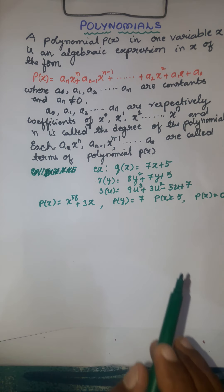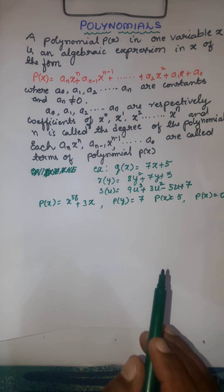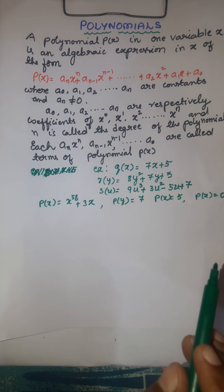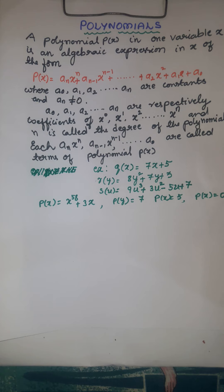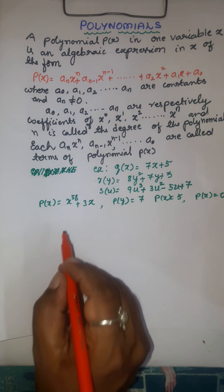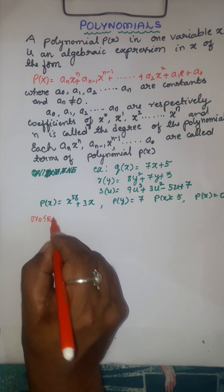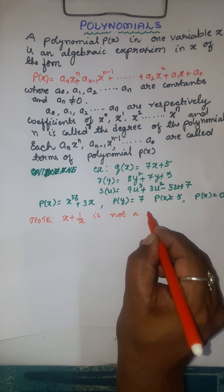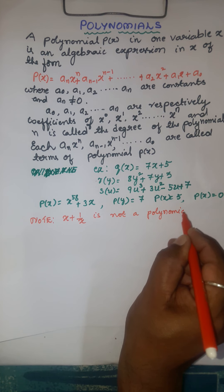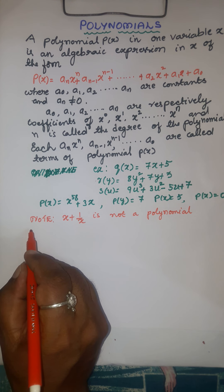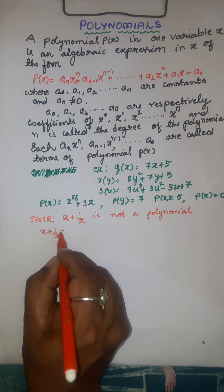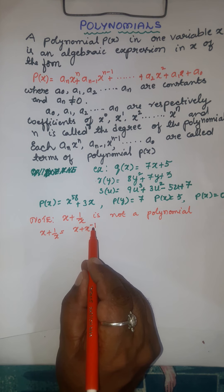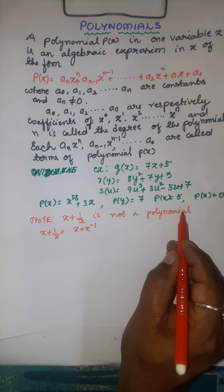Now let us look at expressions which are not polynomials. You know that in a polynomial, the variables involved should have non-negative integers as their powers. See here: x plus 1 by x is not a polynomial, because x plus 1 by x can be written as x plus x to the power of minus 1. The power of x is a negative integer, so therefore x plus 1 by x is not a polynomial.